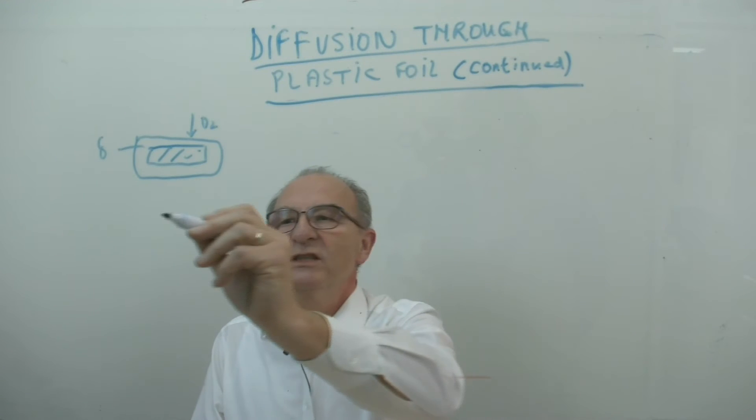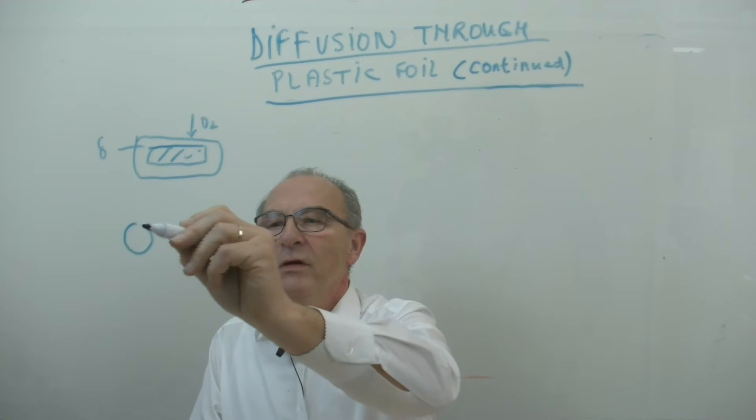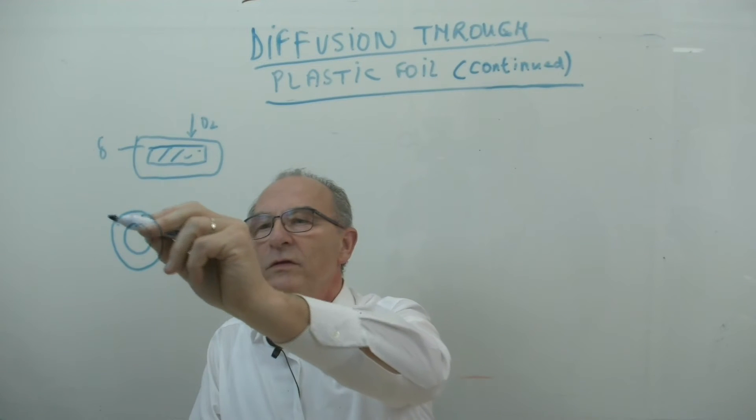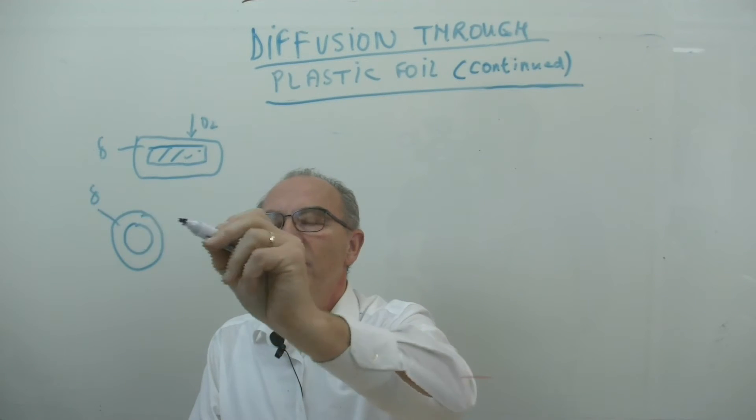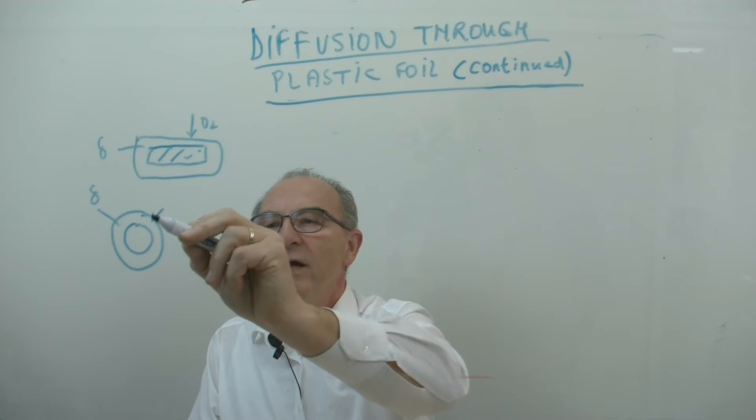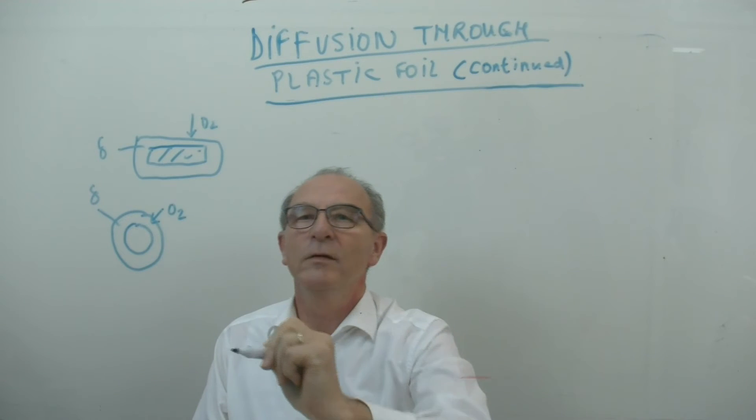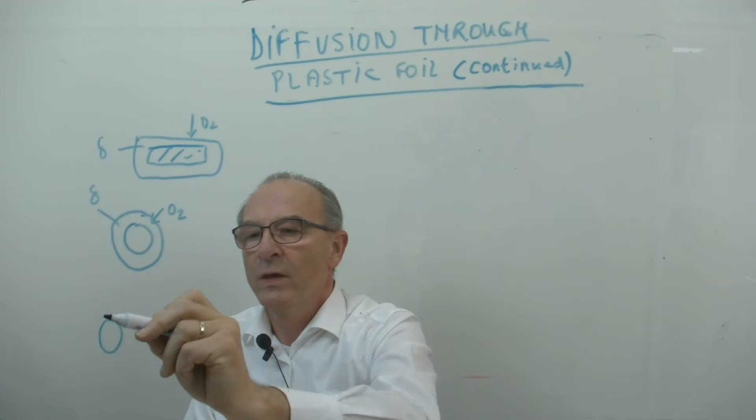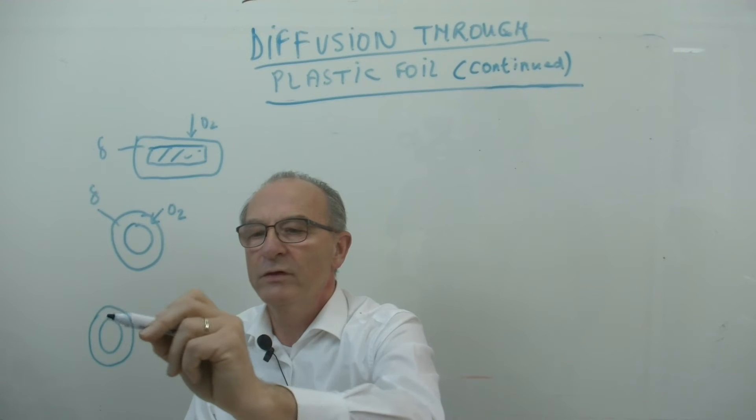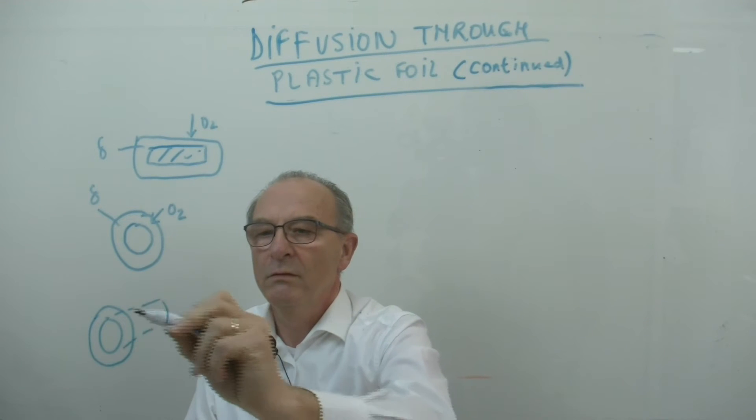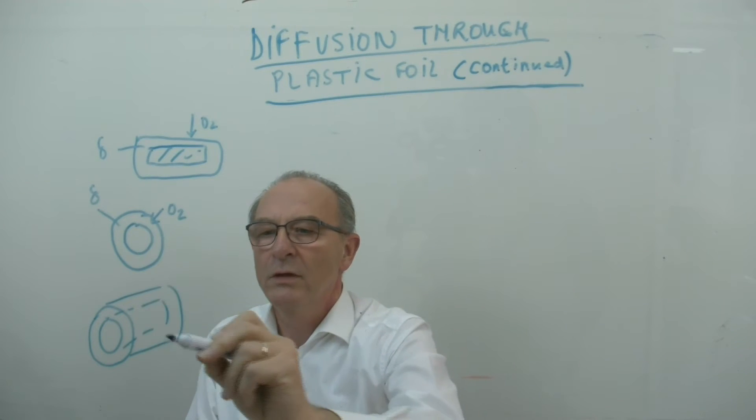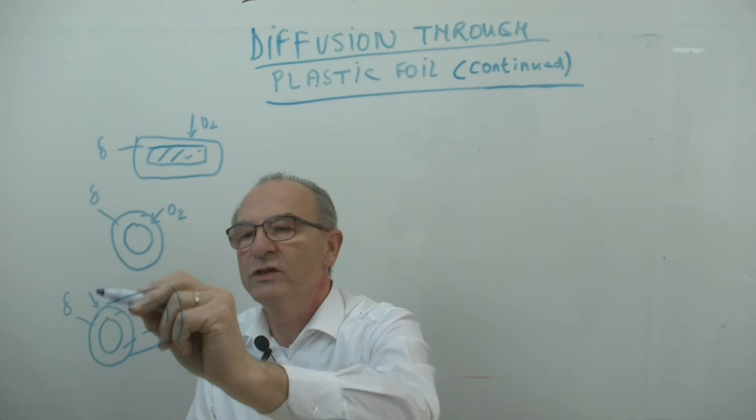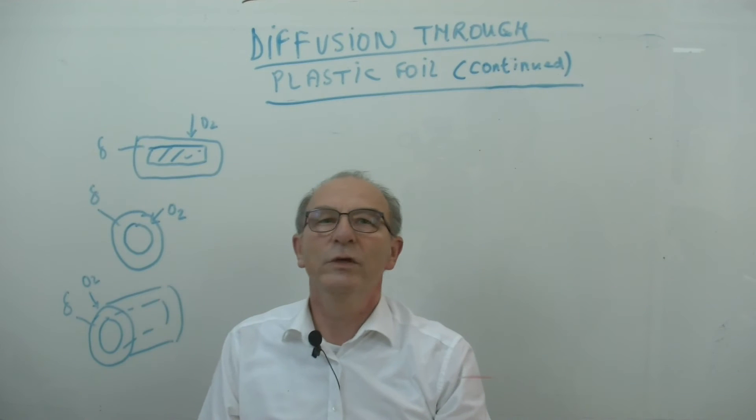So let's see if we have a pill with a foil around it. Similar situation, foil with thickness delta, and oxygen is diffusing into it. And the third one is a cylinder, also with a foil around it. Also with thickness delta, and also oxygen is diffusing into it.